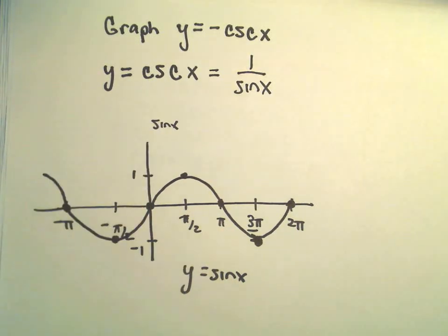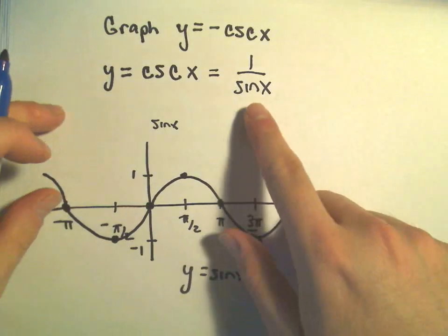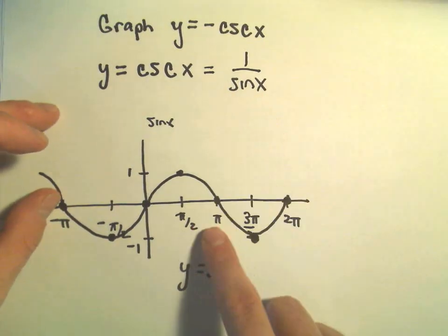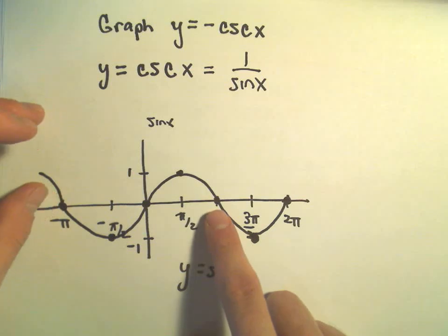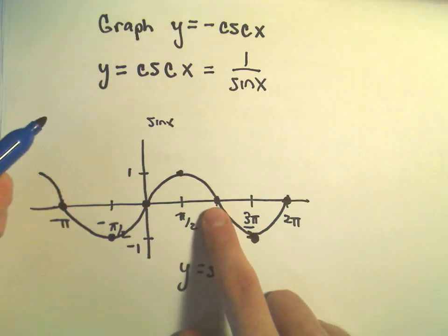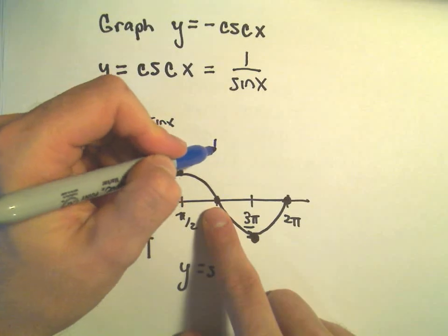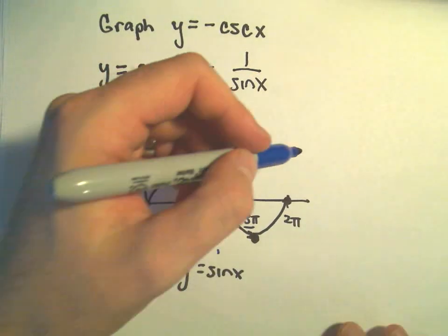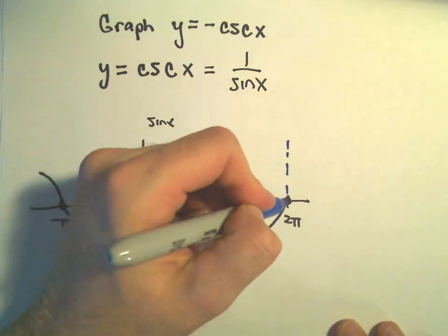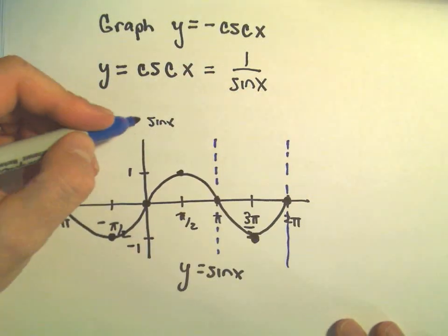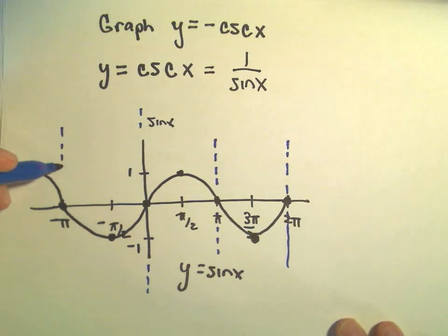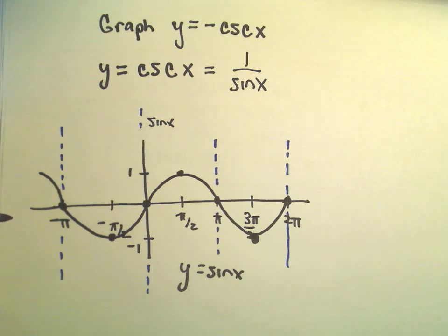Now when I graph cosecant, wherever sine x equals 0, cosecant would be undefined. So anywhere sine x has an x-intercept, cosecant would be undefined. At pi, cosecant would be undefined. At 2 pi, cosecant would be undefined. At 0, cosecant would be undefined. At negative pi, cosecant would also be undefined — any multiple of pi.